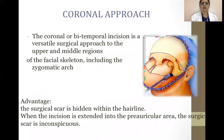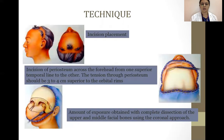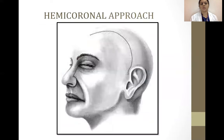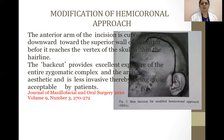The coronal or bitemporal incision is a versatile surgical approach to the upper and middle facial regions. The surgical scar is hidden within the hairline, and when extended into the preauricular area, it is inconspicuous. The incision through periosteum should be three to four centimeters superior to the orbital rims. The hemicoronal modification curves the anterior arm of the incision downward towards the superior wall of the orbit within the hairline. This back-cut provides excellent exposure of the entire zygomatic complex and arch, is aesthetic, less invasive, and quite acceptable to patients.